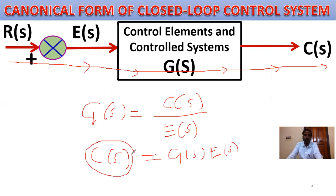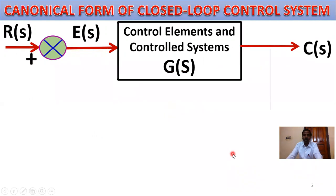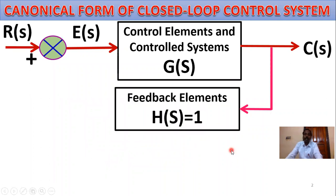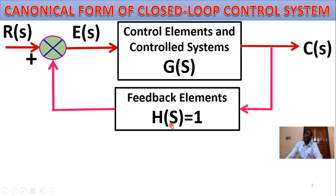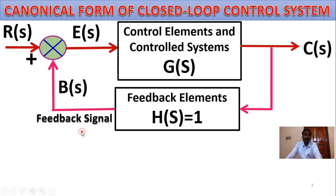For accuracy, we connect a high feedback path. The feedback element H of S equals one. That is why this type of closed loop control system is called a unity feedback closed loop control system — because the feedback gain or feedback transfer function H of S equals one. The output B of S is called the primary feedback signal. This is a negative feedback control system — the canonical form of the closed loop, unity negative feedback control system.